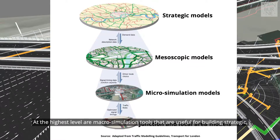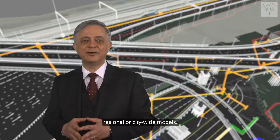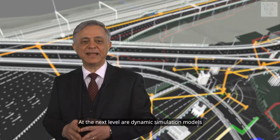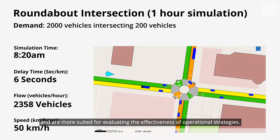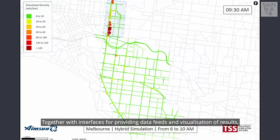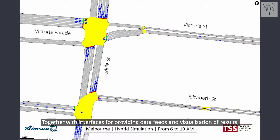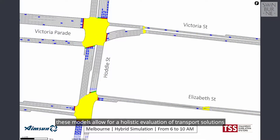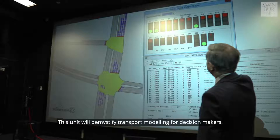At the highest level are macro simulation tools that are useful for building strategic, regional or city-wide models. At the next level are dynamic simulation models which allow for modeling greater levels of detail and are more suited for evaluating the effectiveness of operational strategies. Together with interfaces for providing data feeds and visualization of results, these models allow for a holistic evaluation of transport solutions at different levels of complexity and geographic coverage.